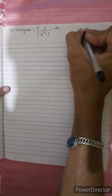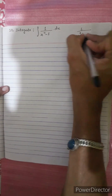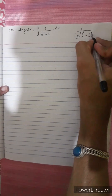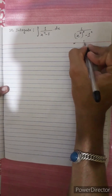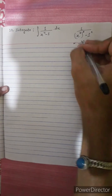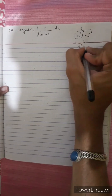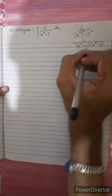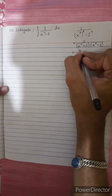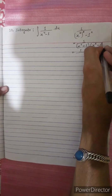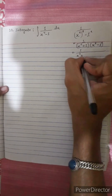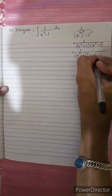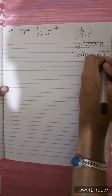x to the power 4 minus 1. Using the difference of squares formula: a squared minus b squared equals (a plus b)(a minus b). So x⁴ minus 1 factors as (x² plus 1)(x² minus 1), which further factors as (x² plus 1)(x plus 1)(x minus 1). This is the formula.